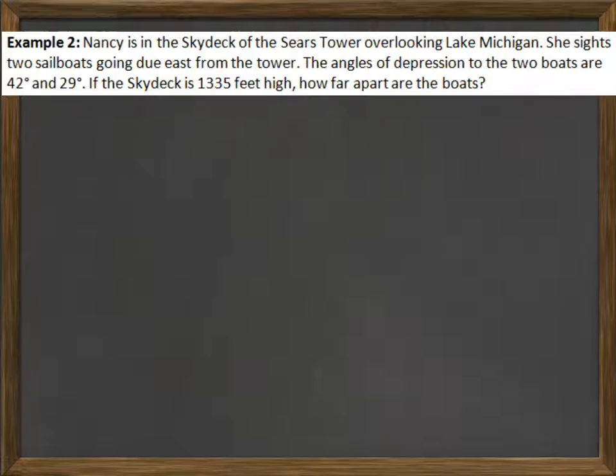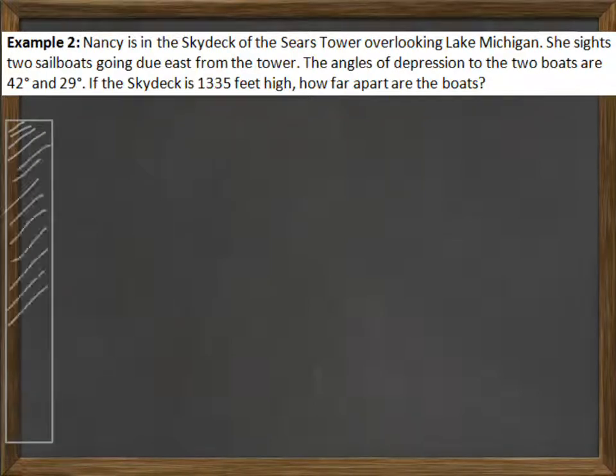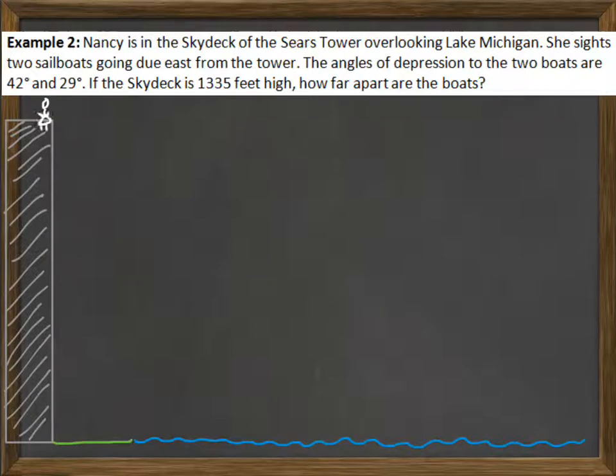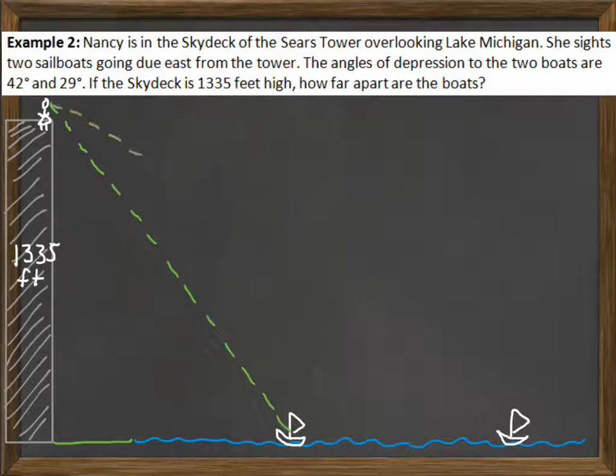Let's draw a picture for this. So here's the Sears Tower. And there's the water. And we've got Nancy on top and two boats. We know that the sky deck is 1,335 feet high. In order to draw the angles of depression, I'm going to need to draw her line of sight to the two boats. So here we go. Here's her line of sight to the first boat. Here's her line of sight to the second boat.